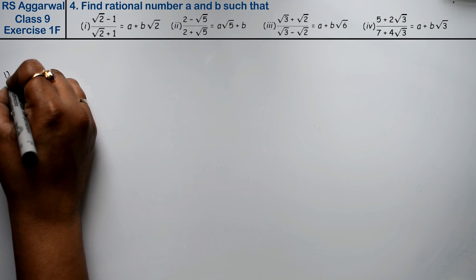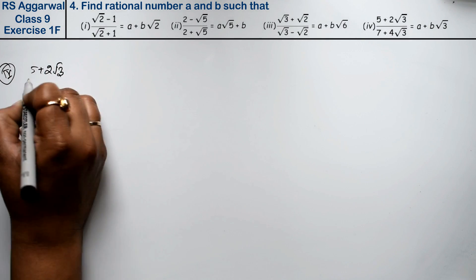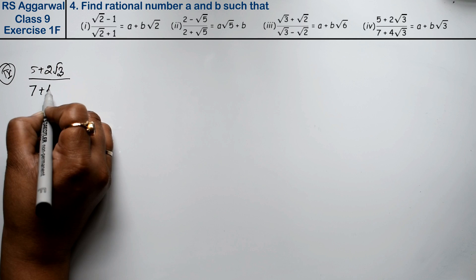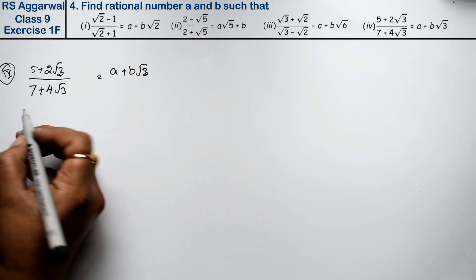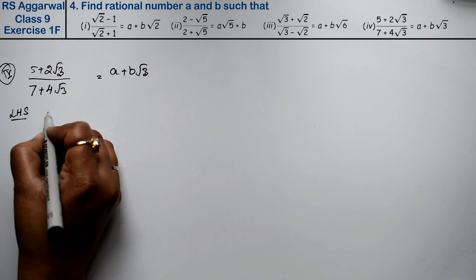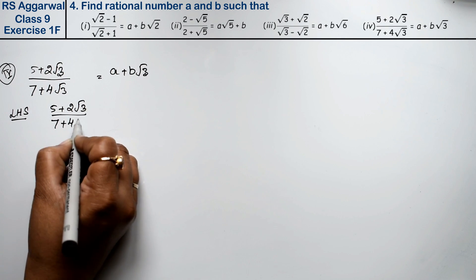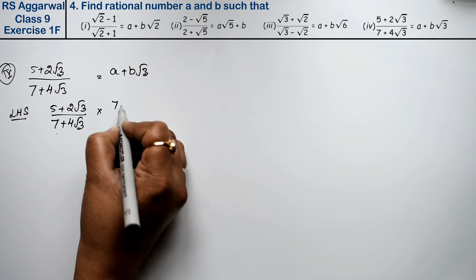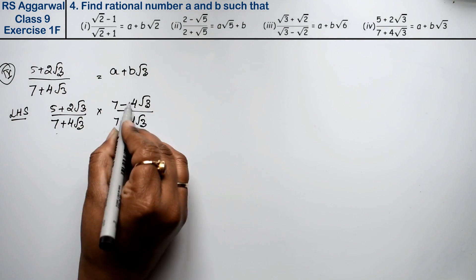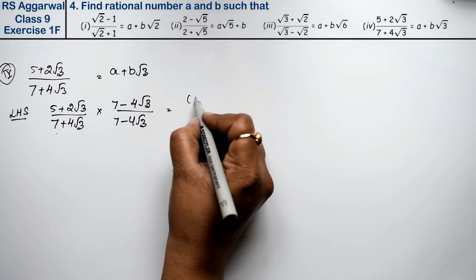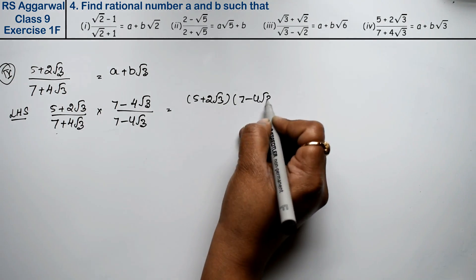Let's do the fourth part. Fourth part is: 5 plus 2 root 3 upon 7 plus 4 root 3 equals A plus B root 3. We take the left-hand side. The denominator is rationalized, so we multiply by 7 minus 4 root 3 upon 7 minus 4 root 3. The two upper brackets are different, so we multiply 5 plus 2 root 3 into 7 minus 4 root 3.